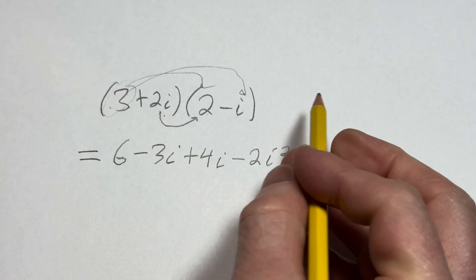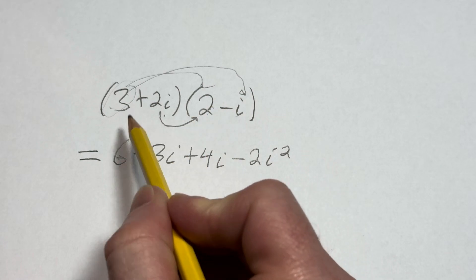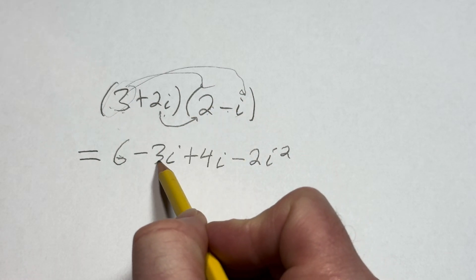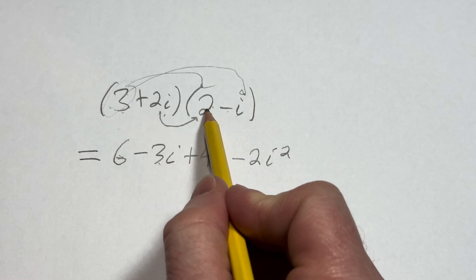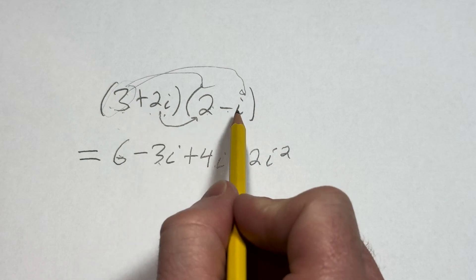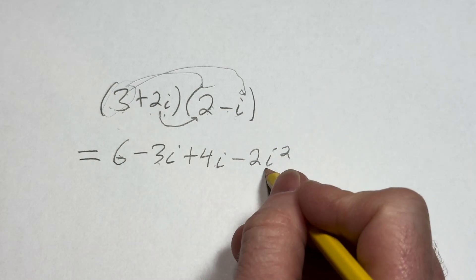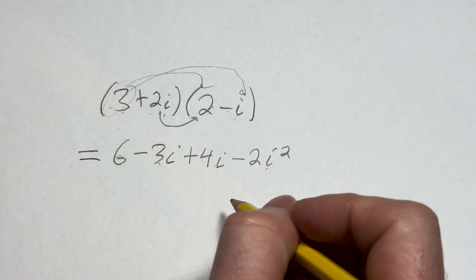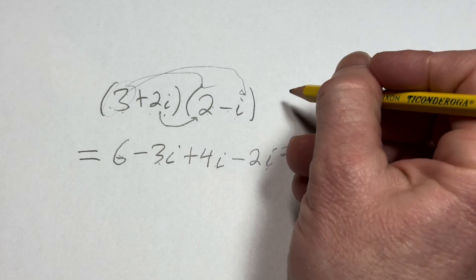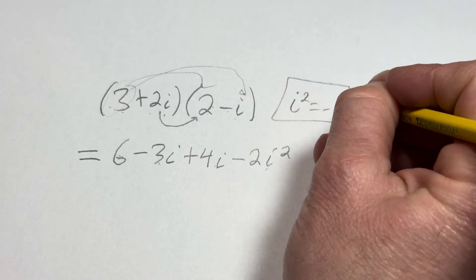Let's just check that: 3 times 2 is 6, 3 times negative i is negative 3i, 2i times 2 is 4i, and 2i times negative i is negative 2i squared. Now i squared is special — i squared is equal to negative 1.